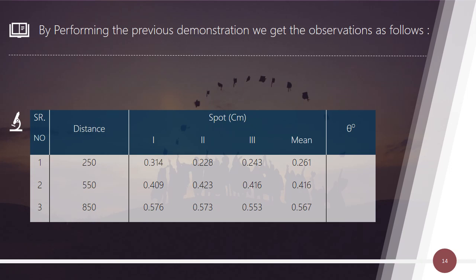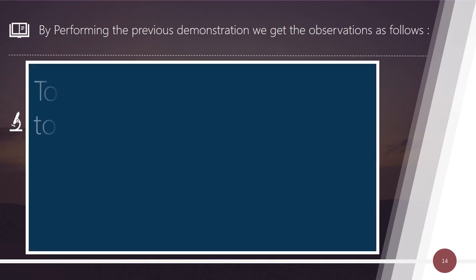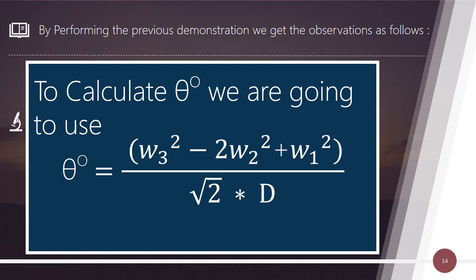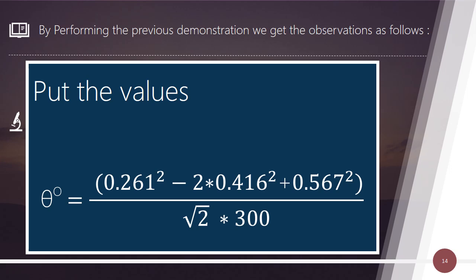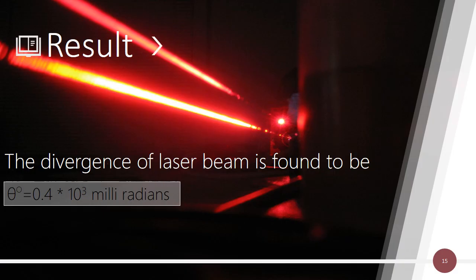By performing the previous demonstration we get the observations as follows. To calculate the result we can use the formula. The divergence of laser beam is found to be 0.4 times 10 raised to power 3 milliradians.